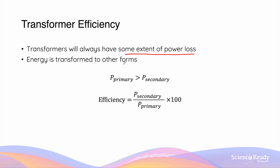Therefore, we can say that in all non-ideal transformers, the power in the primary coil, P_primary, is always greater than the power in the secondary coil, P_secondary. The difference in the two powers is the amount of energy that has been transformed to a different form.